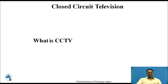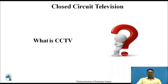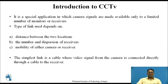So what is CCTV? CCTV is known as closed-circuit television. It is a special application in which camera signals are made available only to a limited number of monitors or receivers. The links used generally depend on: first, the distance between the two locations; second, the number and dispersion of receivers; third, mobility of either camera or receiver. The simplest link used in CCTV is where the video signal from the camera is connected directly through a cable to the receiver.